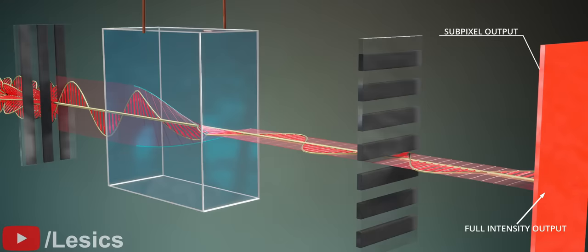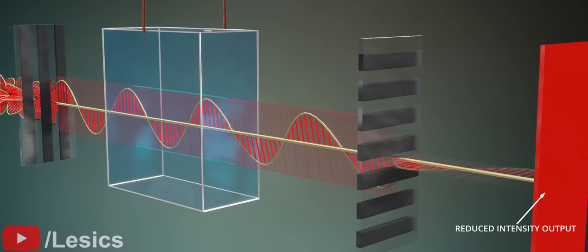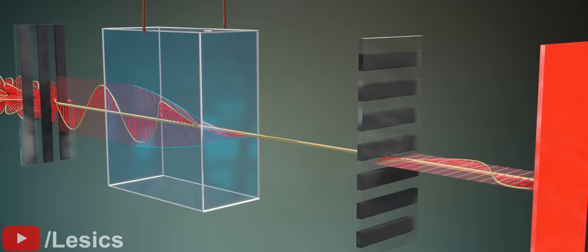If we rotate the light less than 90 degrees, the horizontal polarizer will block out some of the light, and the intensity of the sub-pixel will be reduced. If the angle of rotation is 0 degrees, obviously the whole light will be blocked. This is the way we control each sub-pixel's light intensity.